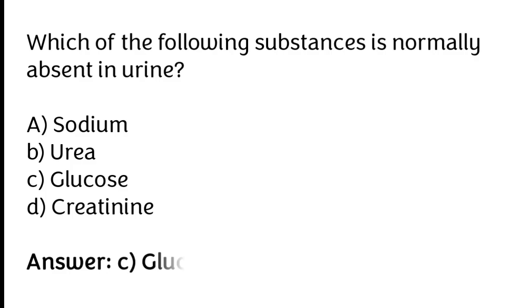The correct answer is option C. Glucose is a substance normally absent in urine.